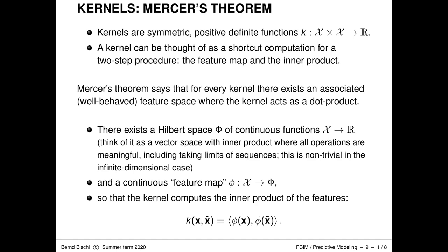I introduced kernels already as symmetric positive definite functions that take a pair of observations and map them to a real value. The kernel can be thought of as a shortcut computation for a two-step procedure: we first apply a feature map, then compute an inner product between the two feature-mapped observations. Mercer's theorem from 1909 states that for every such kernel there exists an associated well-behaved feature space where the kernel acts as a dot product.